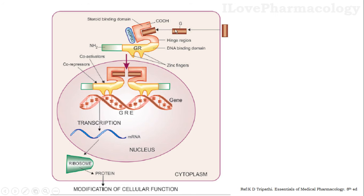Looking at the image, the glucocorticoid enters the cytoplasm and binds to the carboxy terminal of the steroid binding domain. Once it binds, the heat shock protein 90 (HSP90), which was attached to the steroid binding domain, gets detached — removing the inhibitory influence on the steroid binding domain. In the middle there is a DNA binding domain which has two zinc fingers. Once the glucocorticoid binds, dimerization of the two steroid binding domains occurs.